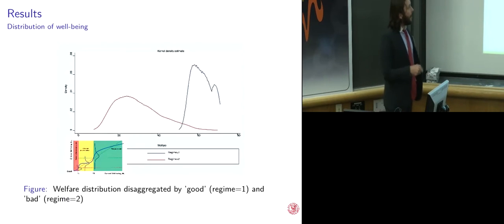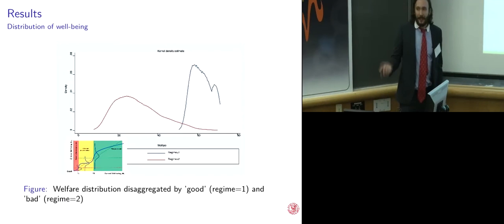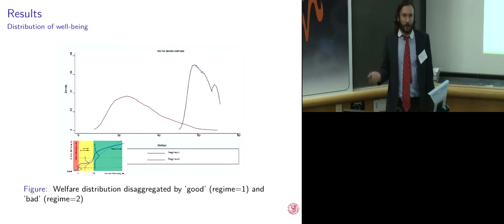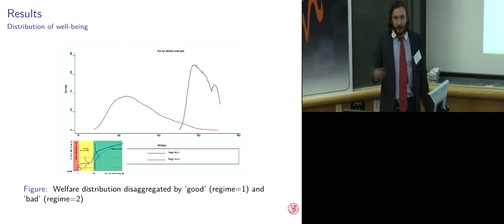So recalling our poverty trap model where we have these two equilibria, I use the hidden market model to plot two different states of well-being. One good state, up here where your welfare is high and it's relatively stable. You can see that by the narrow distribution. And one bad state where your welfare is not only low on average, but it's also very variable. So you don't know from one day to the next or from one month to the next how well you're going to do. And you're much more likely to suffer the vagaries of the slings and arrows of fortune, as Hamlet would say.